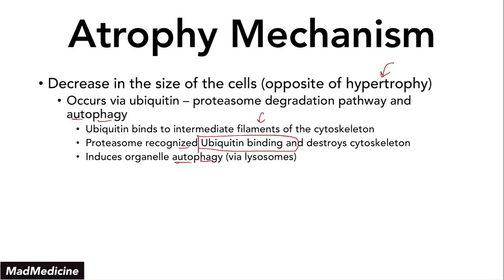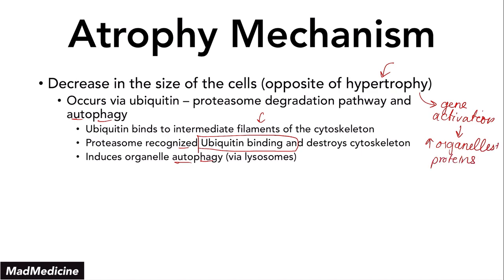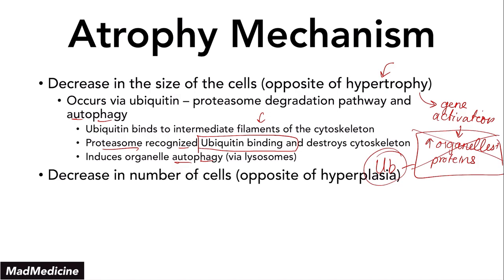This makes a lot of sense when you remember from our previous lecture that hypertrophy involves activation of genes, which induces or increases organelles and proteins. So in order to undo all of that, you tag these organelles with ubiquitin, and proteasomes come in and destroy them, allowing our cell to return to a state of homeostasis.